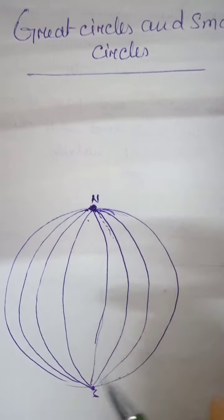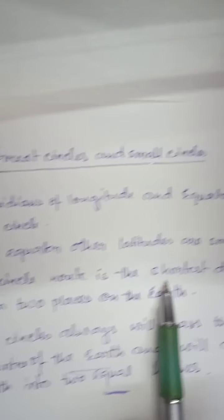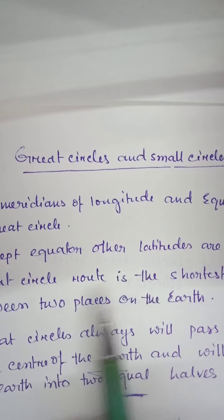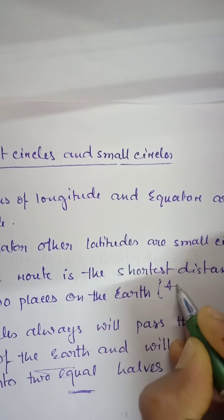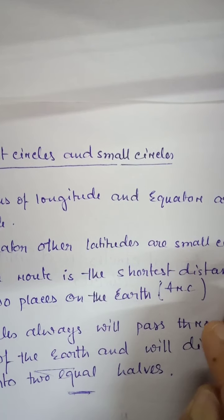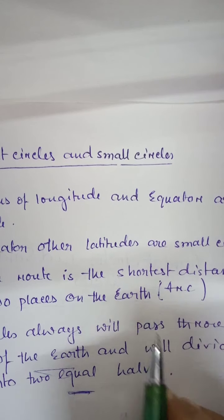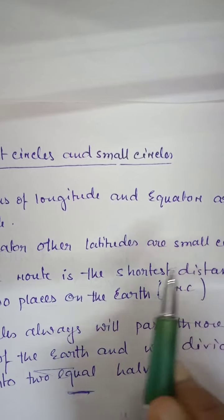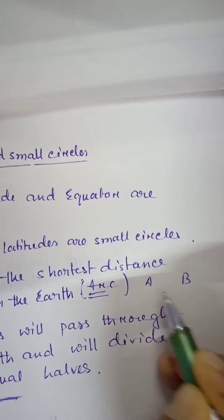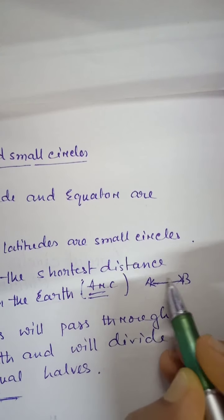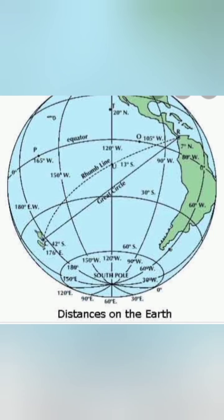One more important point: the great circle route is the shortest distance between any two places on Earth. The great circle route follows the arc, and this arc represents the shortest distance. For example, between place A and place B, the shortest distance is the direct arc of the great circle. We also see two points C and R — the shortest distance between them is the great circle route, which is the arc, while a straight line on a flat map is the longest distance.